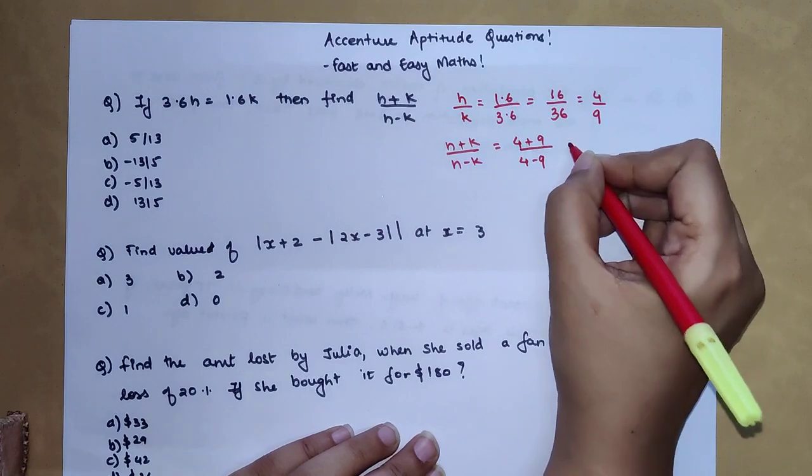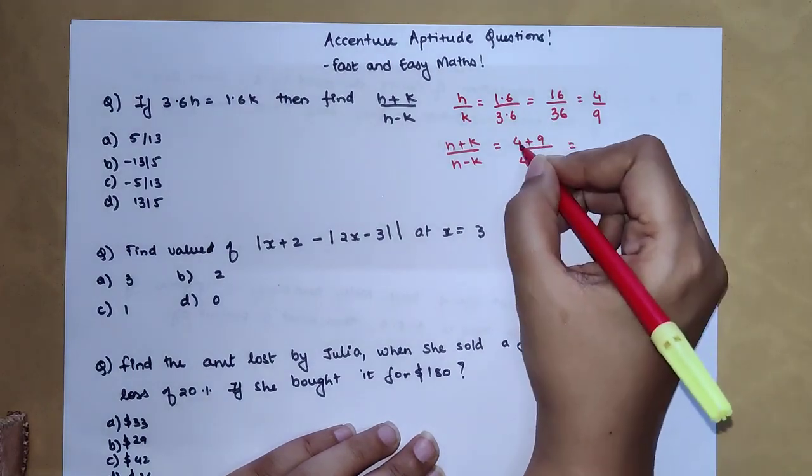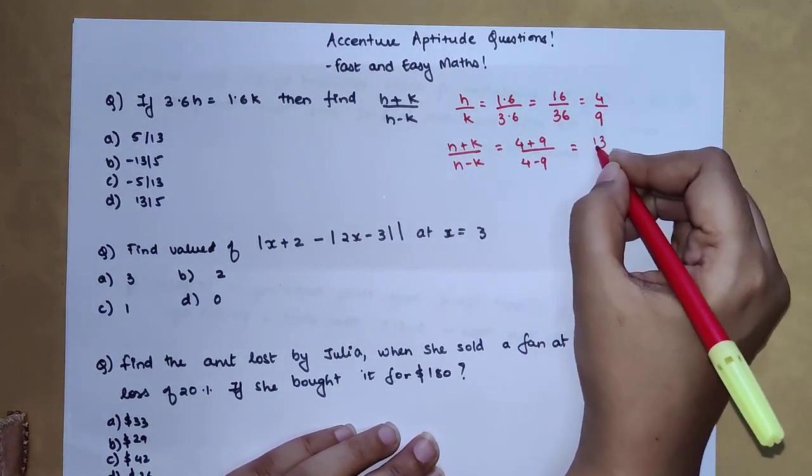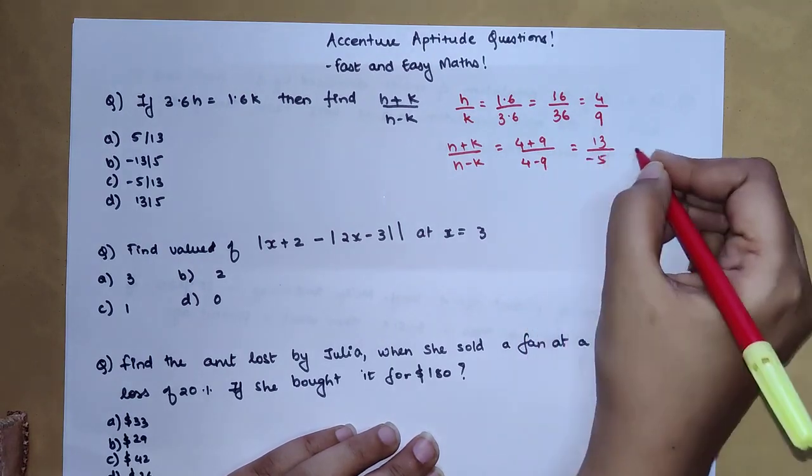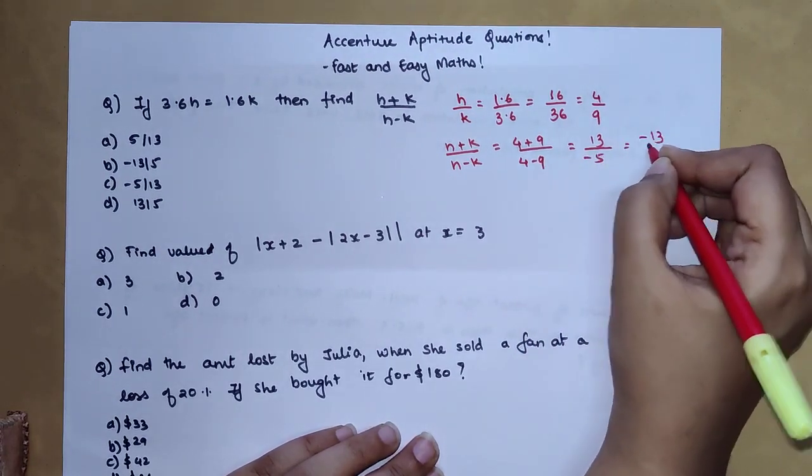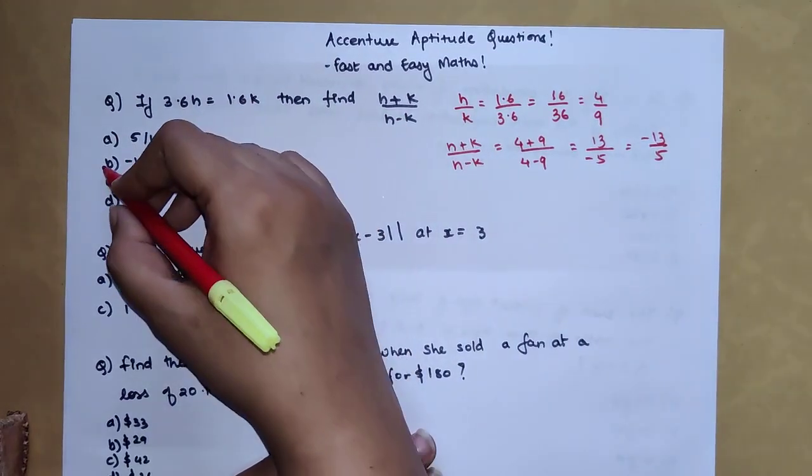Basically we have 4 plus 9 which is 13, and 4 minus 9 which is minus 5. So your answer now changes to -13/5. Option B is your correct option.